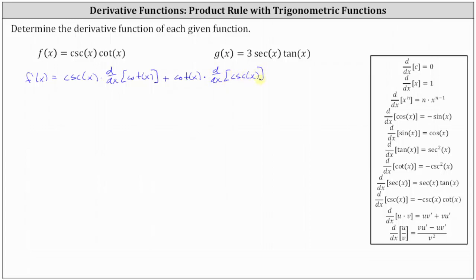Now we need to find the derivative of cotangent x and the derivative of cosecant x. f prime of x is equal to cosecant x times the derivative of cotangent x, which is equal to negative cosecant squared x. And then we have plus cotangent x times the derivative of cosecant x, which is equal to negative cosecant x cotangent x.